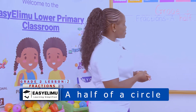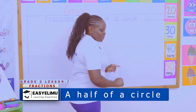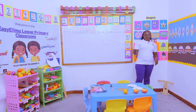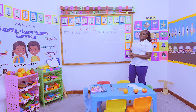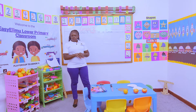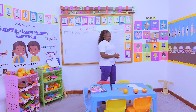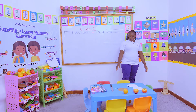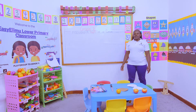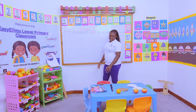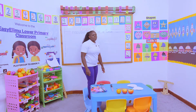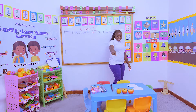We're still working on fractions, but today can you take out your circular cutouts? Let me see your cutouts. Did you bring more from home? Yes, teacher, we brought more from home. I have my orange here, still intact — a whole. And what did we say a whole is? We said a whole is a complete thing.